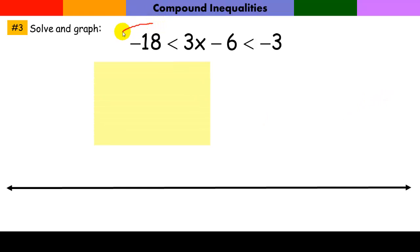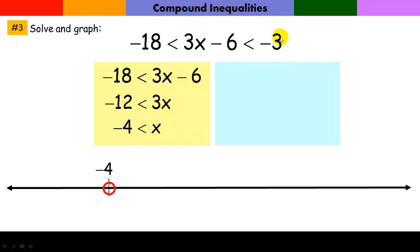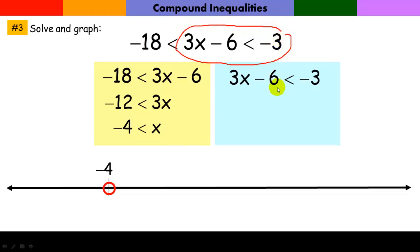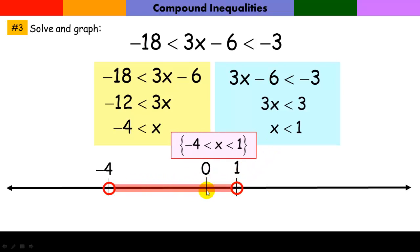We handle it the same way. For the first inequality: add six, divide by three — I have x is greater than negative four; there's one boundary point. For the second: add six, divide by three — I have x is less than one; there's the other boundary point. All x's greater than negative four and all x's less than one. There's the solution graph, and my solution set is here.